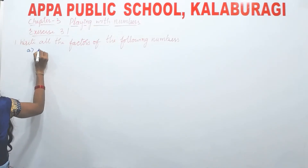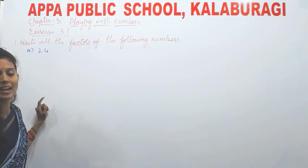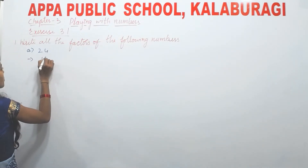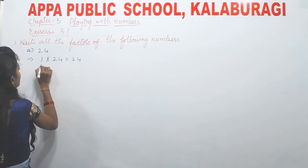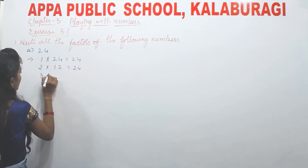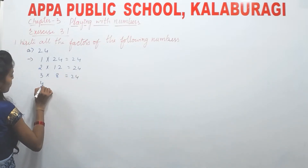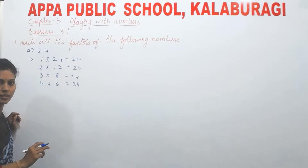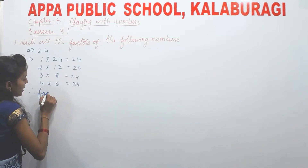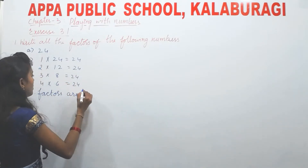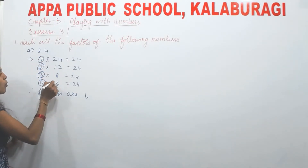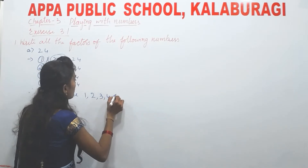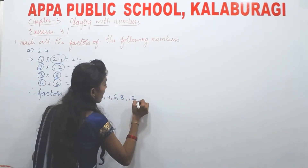The first number is 24. Which numbers divide 24? We check: 1×24=24, 2×12=24, 3×8=24, 4×6=24, 6×4=24, 8×3=24, 12×2=24, 24×1=24. So therefore the factors of 24 are 1, 2, 3, 4, 6, 8, 12, and 24.